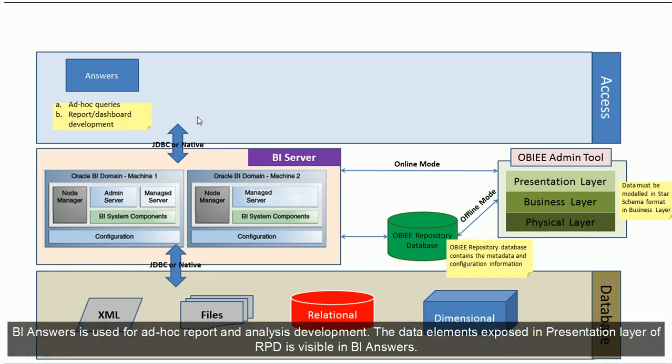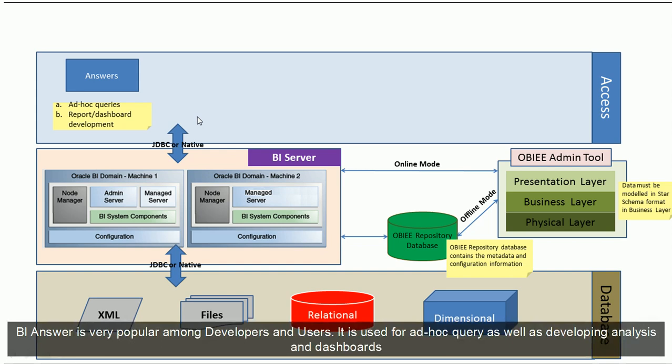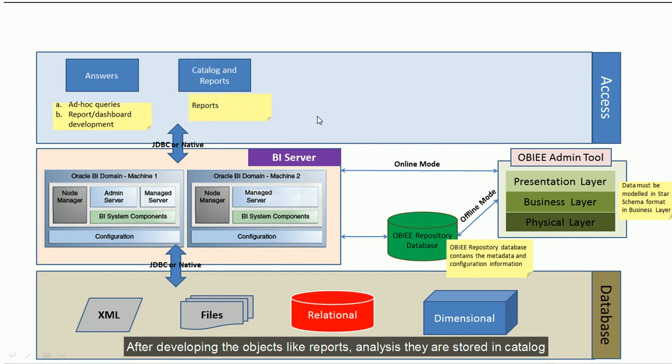BI Answers is used for ad hoc report and analysis development. The data elements exposed in the presentation layer of the RPD are visible in BI Answers. Using BI Answers, OBIEE users can drag and drop those data elements and develop their own reports and analysis. BI Answers is very popular among BI developers and users, and it is used for ad hoc queries as well as developing analysis and dashboards. Once reports are developed, they are stored in the catalog.